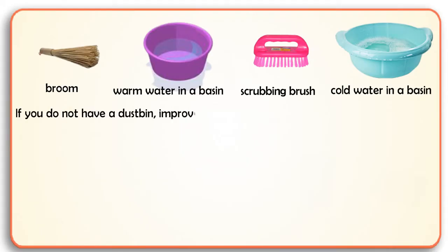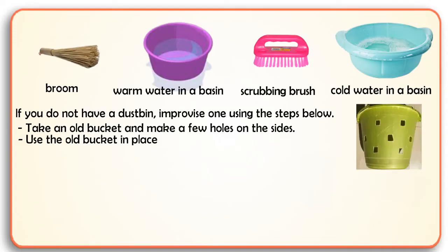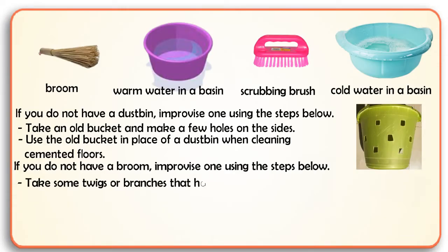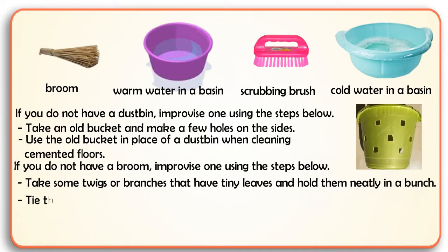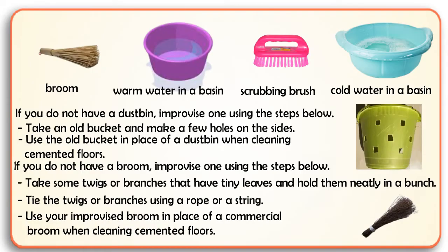If you do not have a dustbin, improvise one by taking an old bucket and making a few holes on the sides. Use the old bucket in place of a dustbin when cleaning cemented floors. If you do not have a broom, improvise one by taking some twigs or branches that have tiny leaves and holding them neatly in a bunch. Tie the twigs or branches using a rope or a string. Use your improvised broom in place of a commercial broom when cleaning cemented floors.